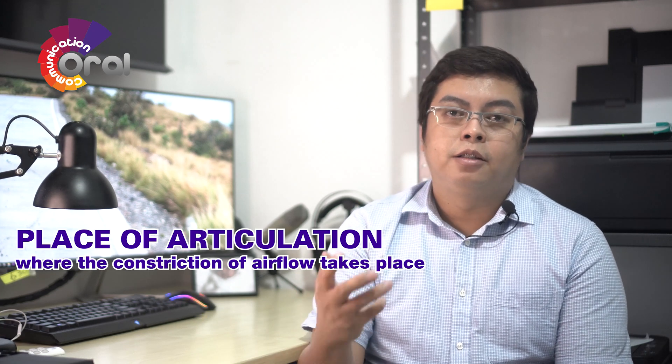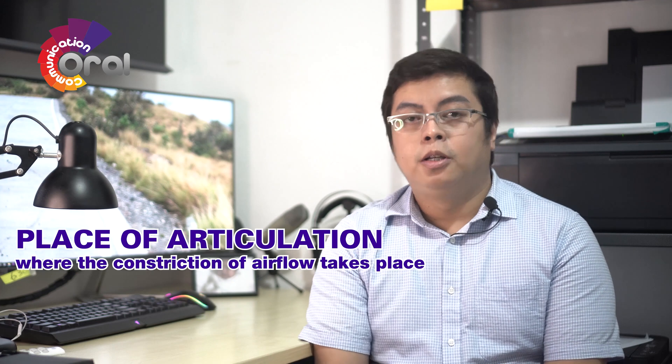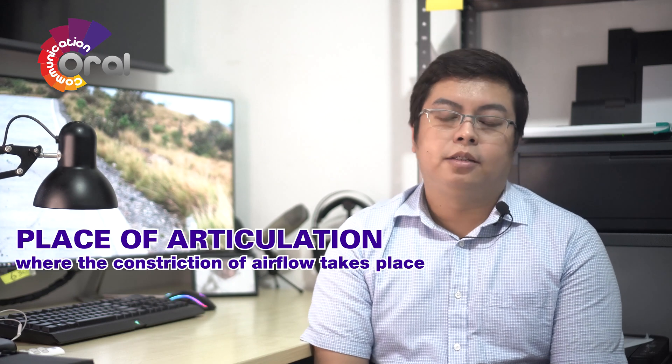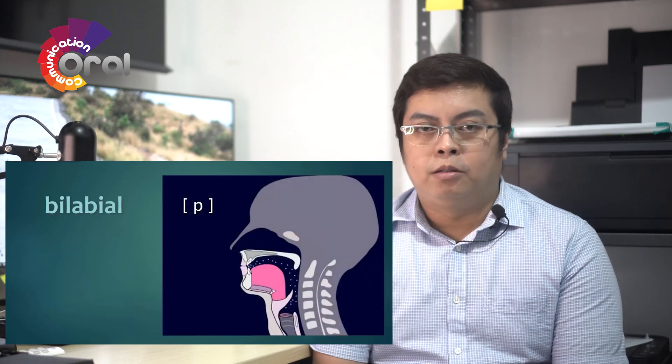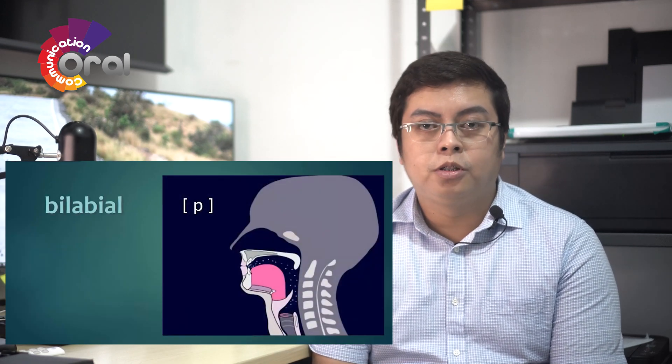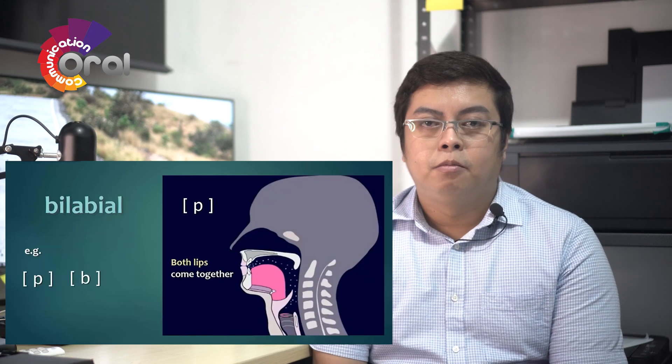Now let's move to the second part: the place of articulation — where in the vocal tract the constriction of airflow takes place. Bilabial sounds are produced with both lips.